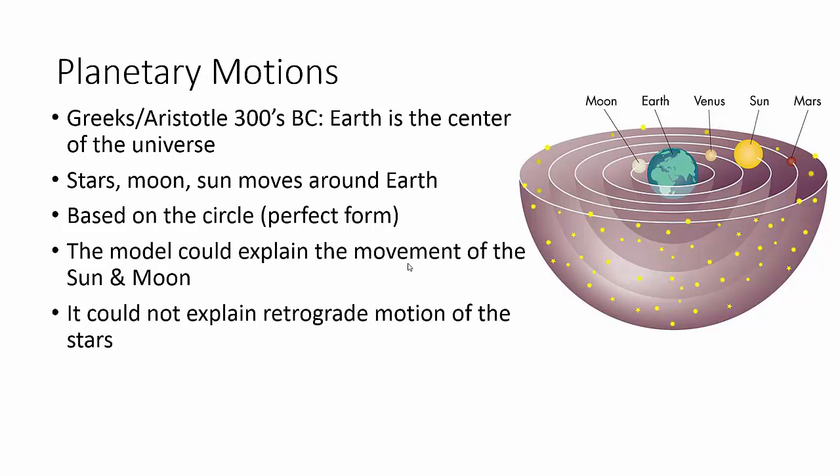Anyway, so what he did, which kind of is shown in that picture there, is everything that his model had pretty much could explain most things. Could explain the sun, could explain the moon, could explain the stars going around us. But it couldn't explain these stars that are going backwards or changing in brightness.